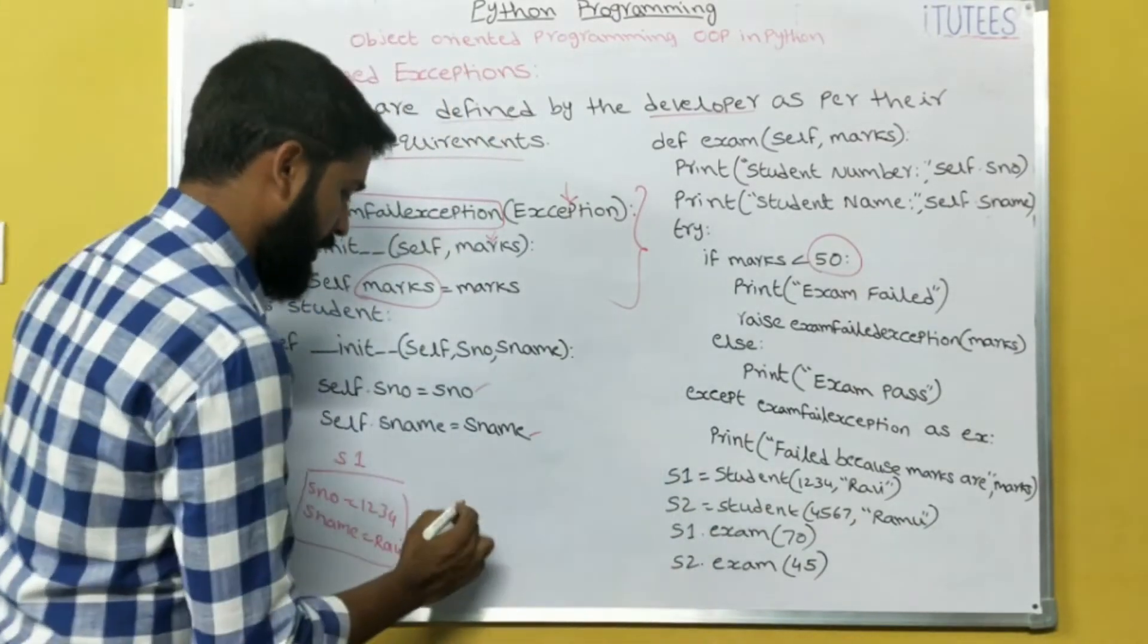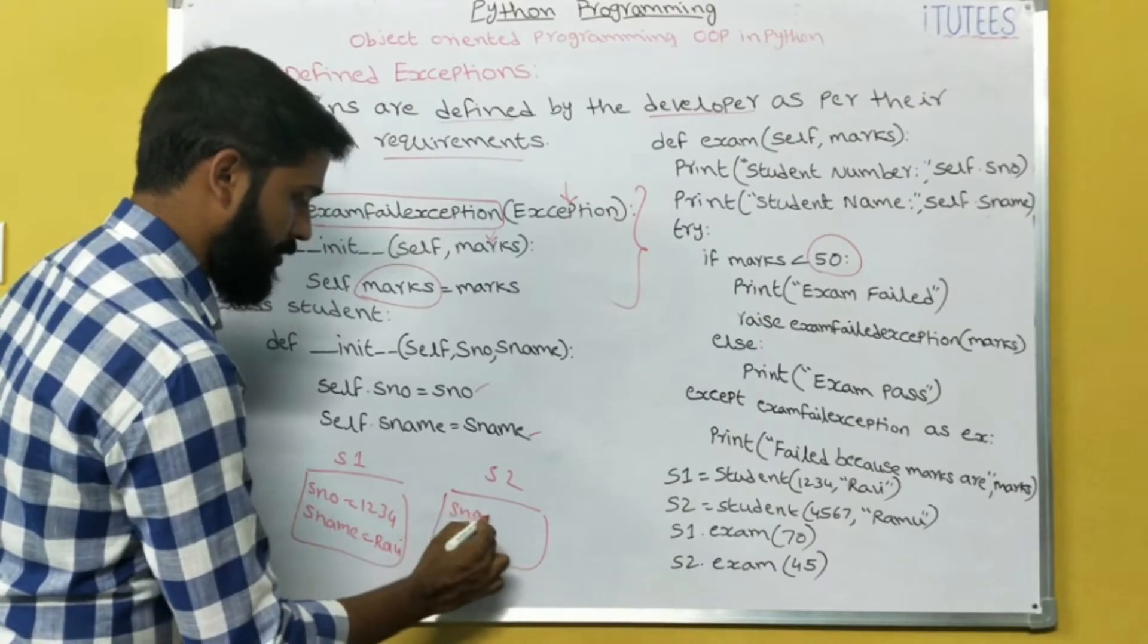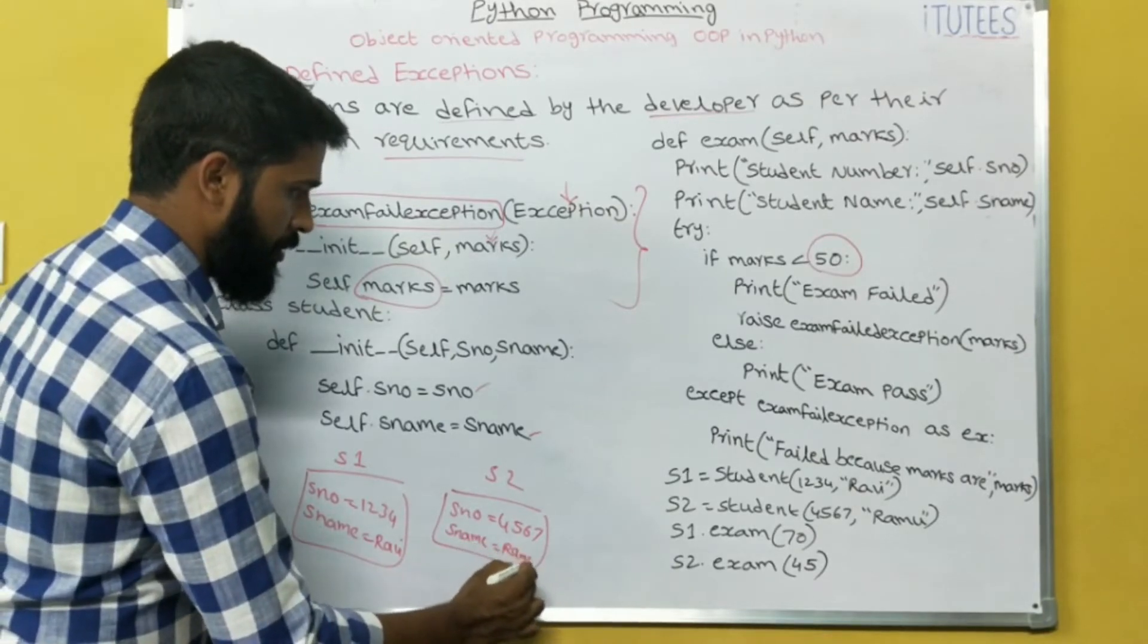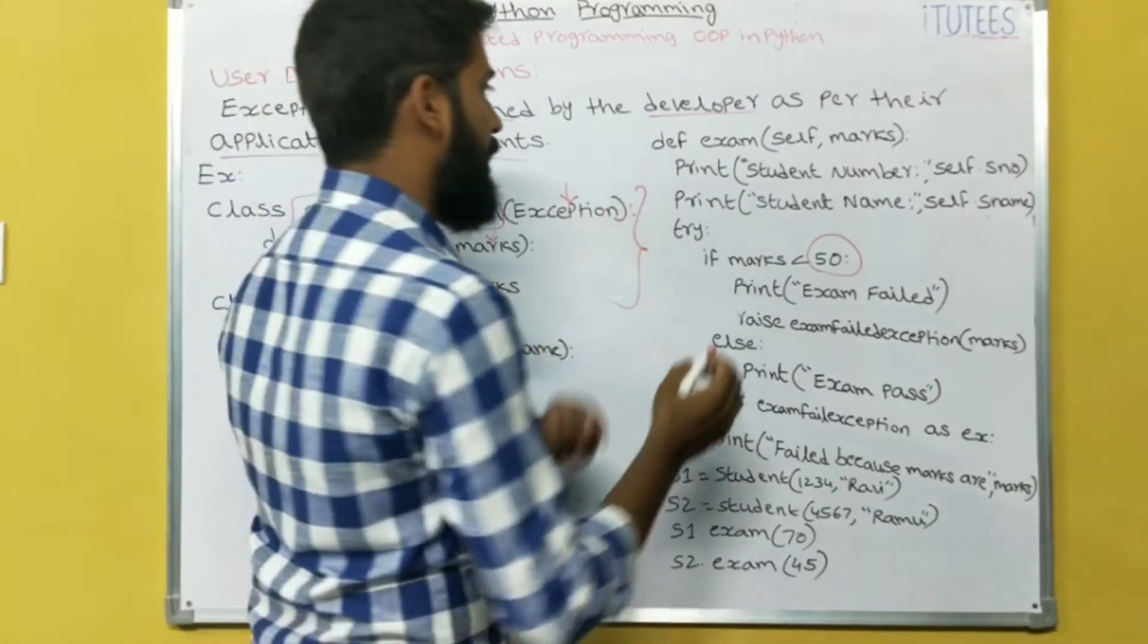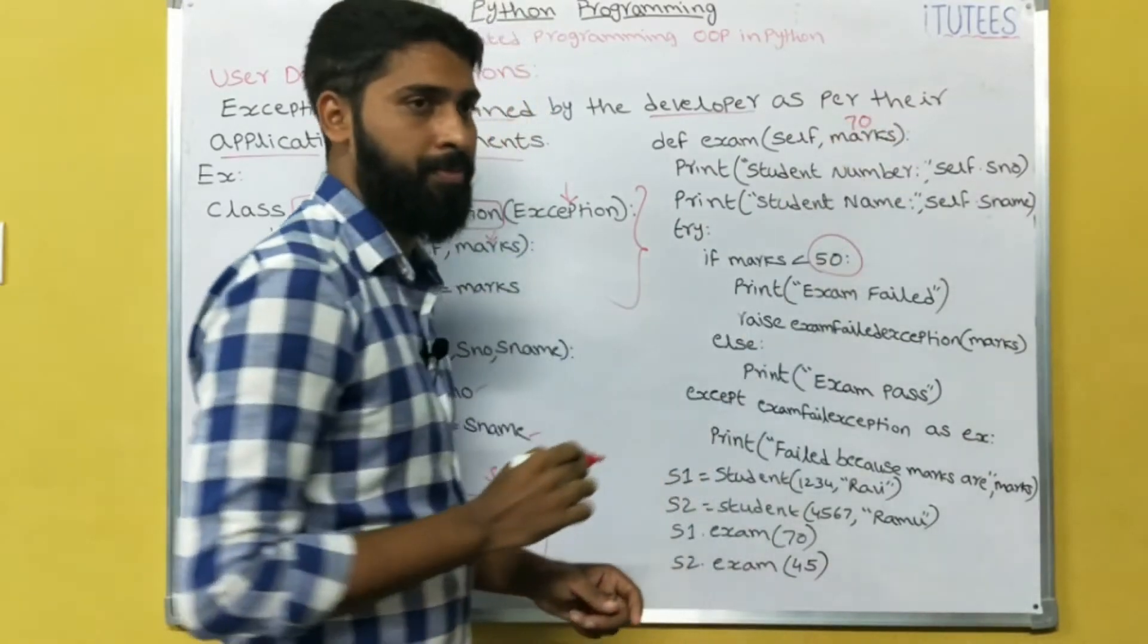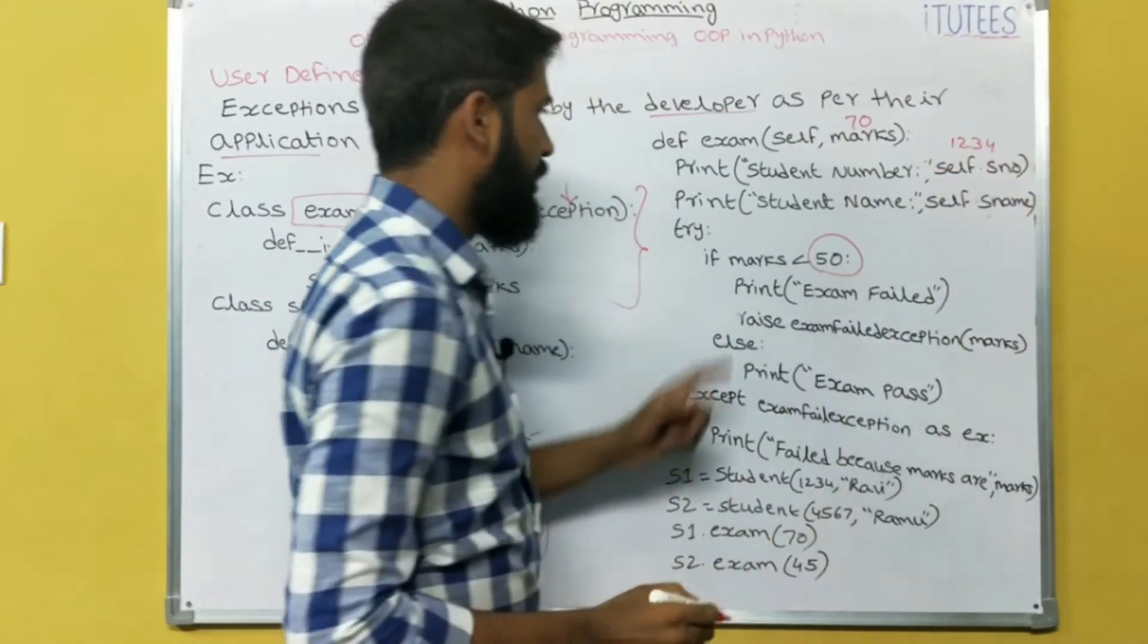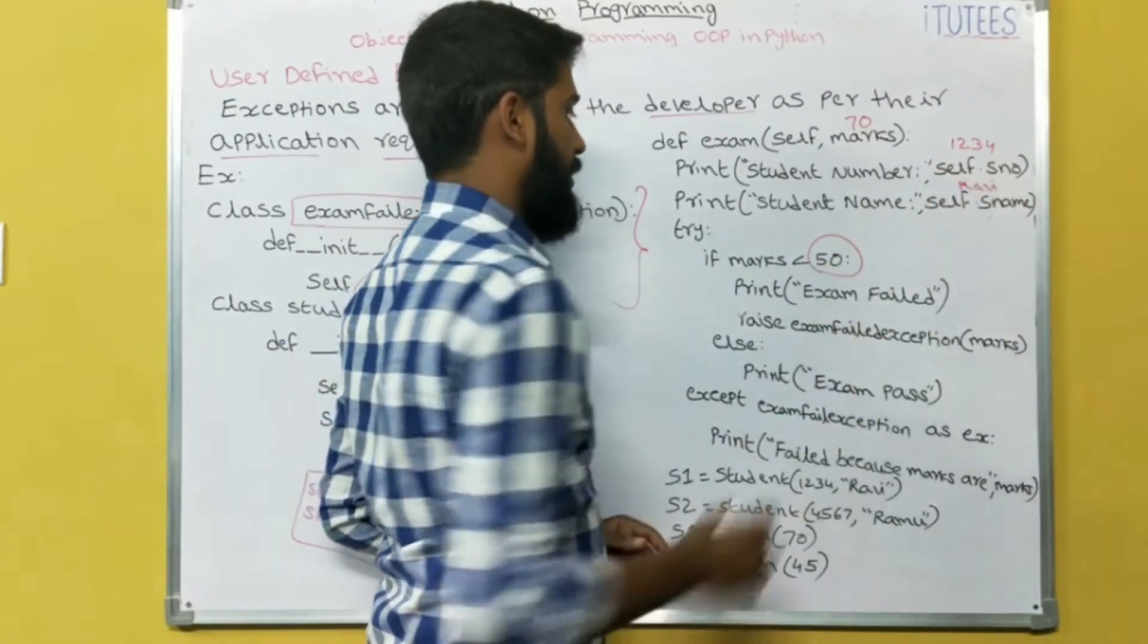S2 equals to student - that means another object S2. s_number equals to 4567, s_name equals to Ramu. S1.exam - that means exam is the method in the class student. What is the argument? marks equals to 70. Now I am going to print student number 1234, student name Ravi.